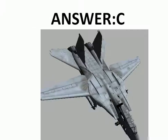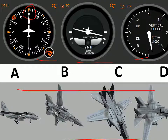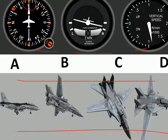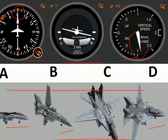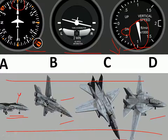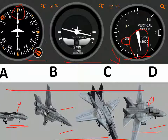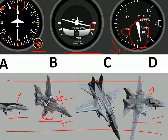The answer is option C. The compass is pointing towards east, narrowing it down. The vertical speed indicator shows the plane is going downward, eliminating options that show the plane going straight. The turn coordinator shows the plane is banking towards right — if you are the pilot sitting in the cockpit, the plane is bent towards your right — so option C is the answer.